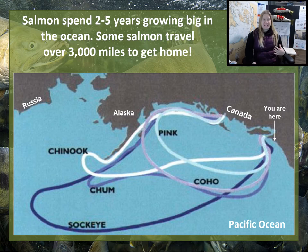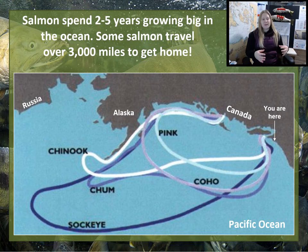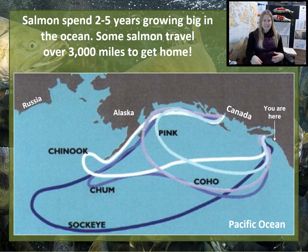Salmon spend two to five years growing big in the ocean and can travel more than 3,000 miles — sometimes over 18 miles per day. Different species travel different routes: chinook, sockeye, chum, coho, and pink salmon all take different paths, but they all head north toward Alaska, with some traveling further than others. Remember how salmon find their way home — using water, magnetic fields, salinity, temperature, and their sense of smell — all helping them find their natal stream after traveling thousands of miles.